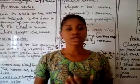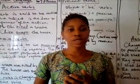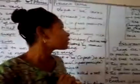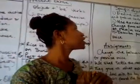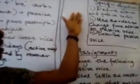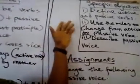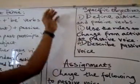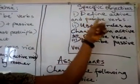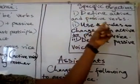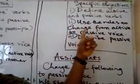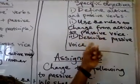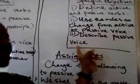Hello students. Our today's topic is on active verbs and passive verbs. But first of all, we are going to look at our objectives — the things that we are meant to achieve once the lesson is done. The first one is define active and passive verbs. Use the rules to change from active to passive voice. Describe passive voice.